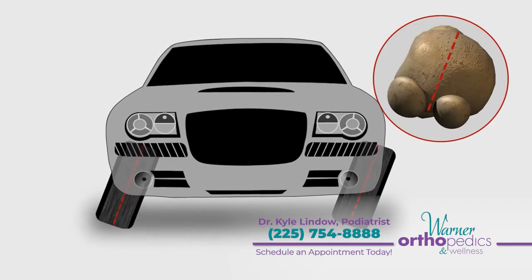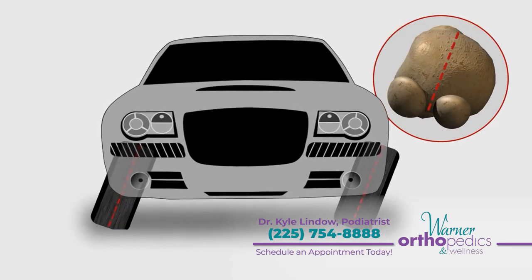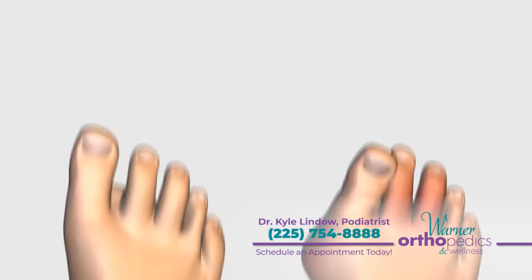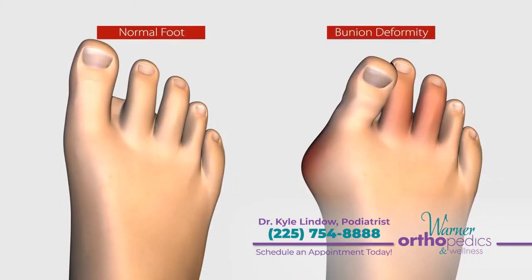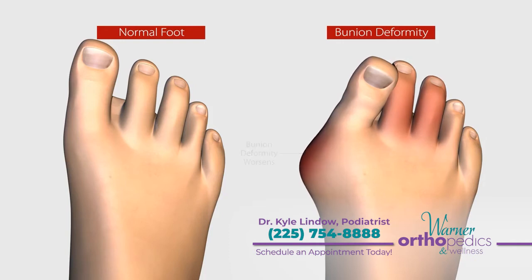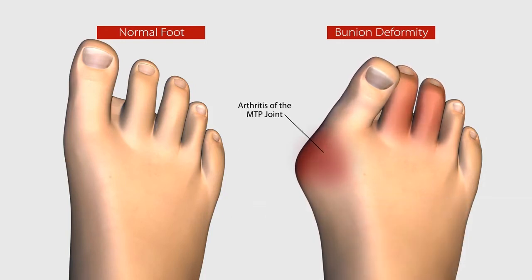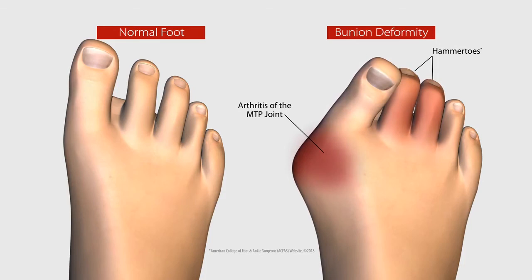This 3D misalignment of your bone can cause abnormal wear and tear on your big toe joint. Left untreated, it can progress, worsening the bunion deformity and initiating other serious problems such as joint pain and stiffness, severe arthritis, and hammer toes.